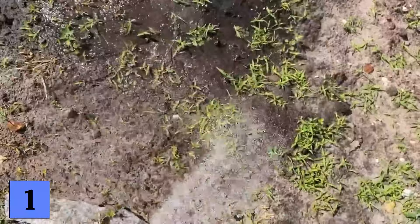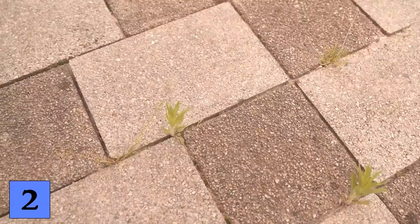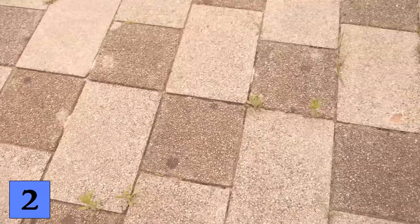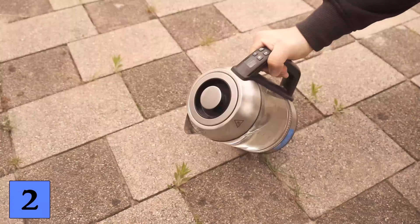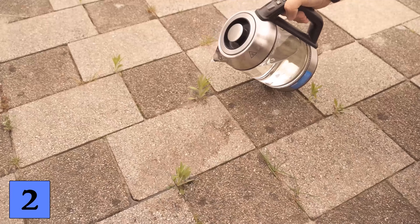With trick number 2, we get to grips with the weeds between our joints. Because you can remove this in a really simple way, all you need is boiling water. Heat it in a kettle or in a pot and then pour a little of the water on the weeds.